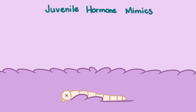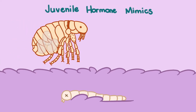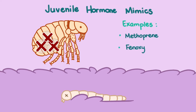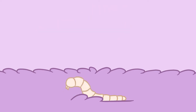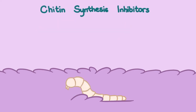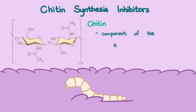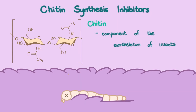When absorbed by gravid female fleas, juvenile hormone mimics also affect the developing eggs. Examples of juvenile hormone mimics are methoprene, phenoxycarb, and pyriproxyfen. As for chitin synthesis inhibitors, chitin is a component of the exoskeleton of insects. With its synthesis inhibited, the growing larvae cannot molt and may even die within the egg. Examples of this include lufenuron, which can be given orally or as an injectable.